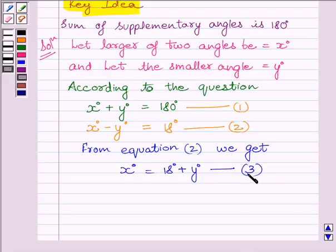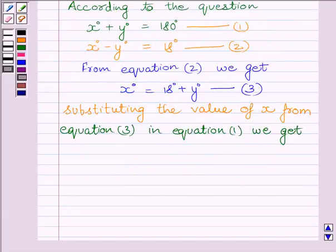Now, substituting the value of x from equation 3 in equation 1, we get 18 plus y plus y is equal to 180 degrees.